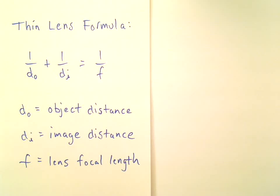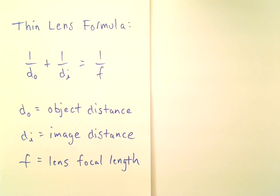Here it is — the thin-lens formula. If you have any experience with this equation, you know what a headache it can be keeping track of the pluses and minuses. That's because any of these three quantities can be either positive or negative, and if you don't know why a particular quantity is positive or negative, you're going to have a hard time finding the right answer. You can try to remember what's plus or minus, but that's not so easy — I've been tutoring this stuff for years and I still couldn't remember. The good news is you don't have to remember. If you have a basic understanding of how lenses work, you can deduce what's positive and negative, and that's what I'm going to show you how to do.